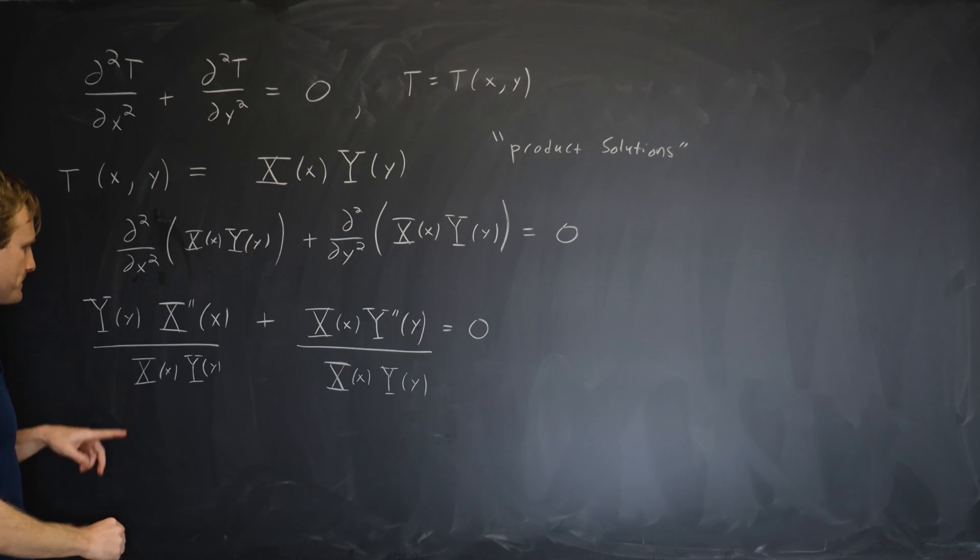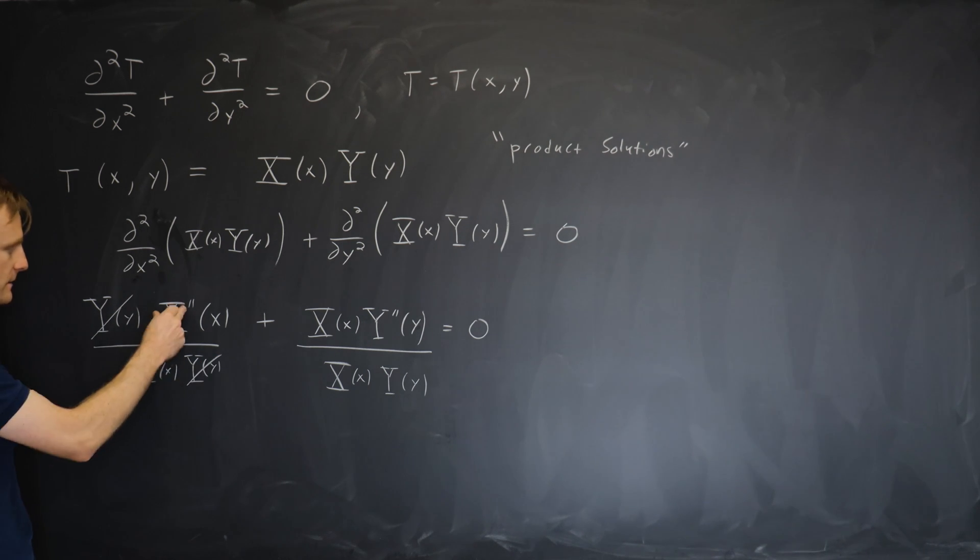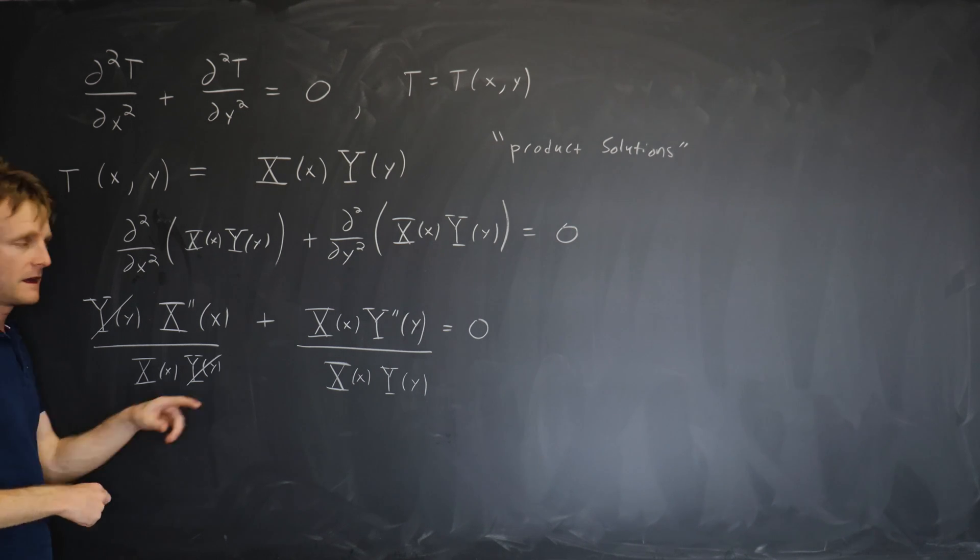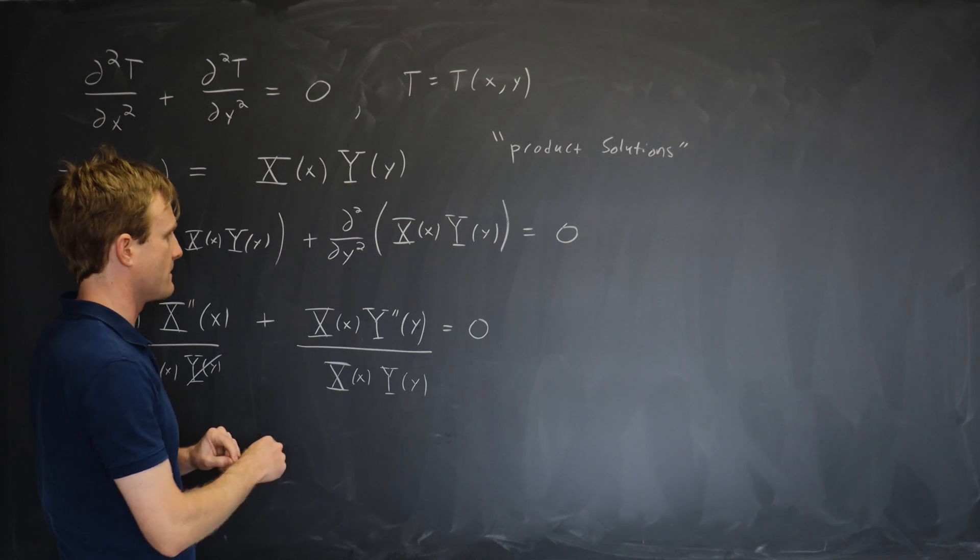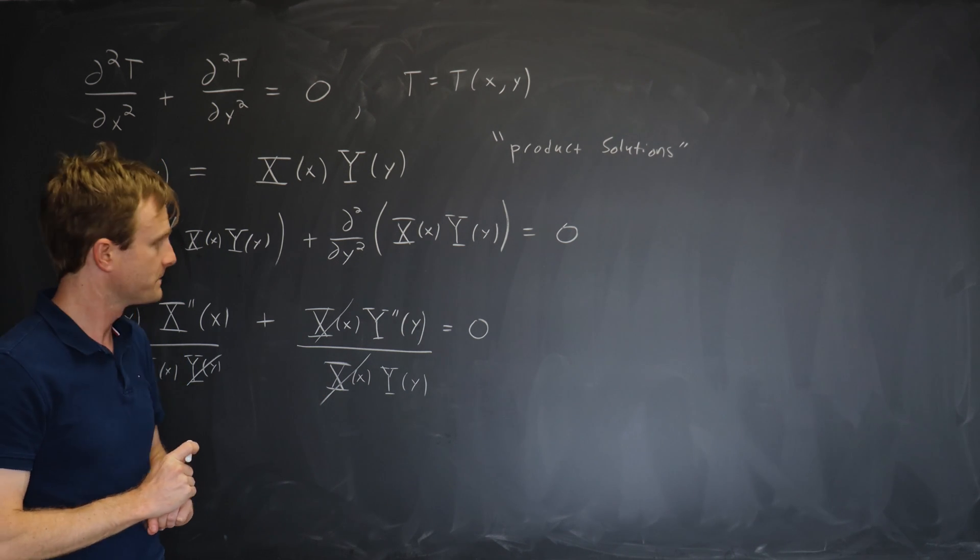And look what happens. Here we have a capital Y of y canceling and so we're just left with stuff involving x. And over here we have capital X canceling and we're just left with stuff involving y.